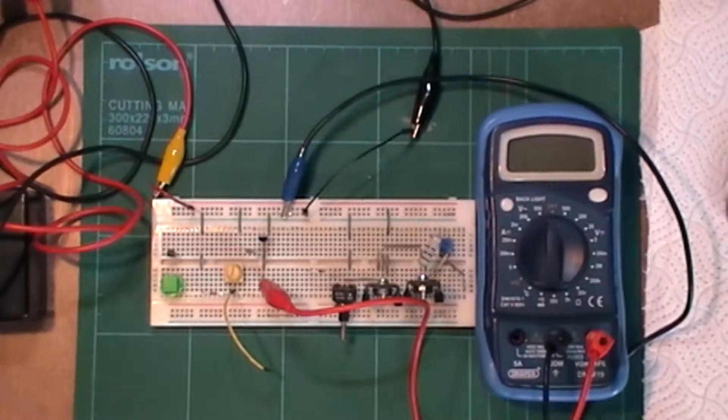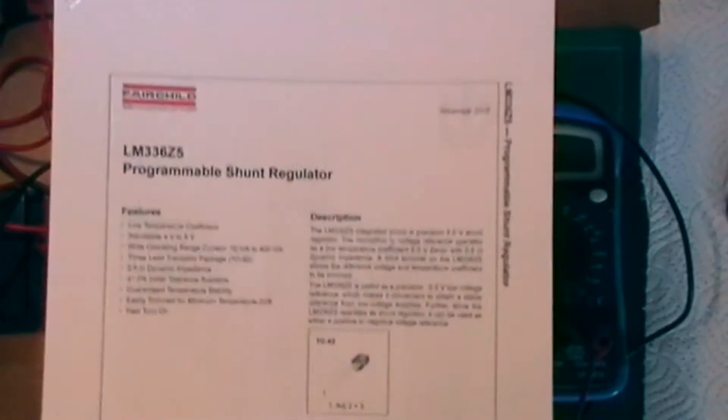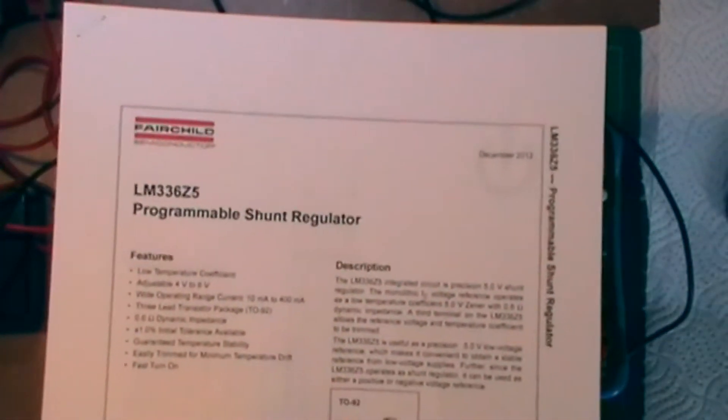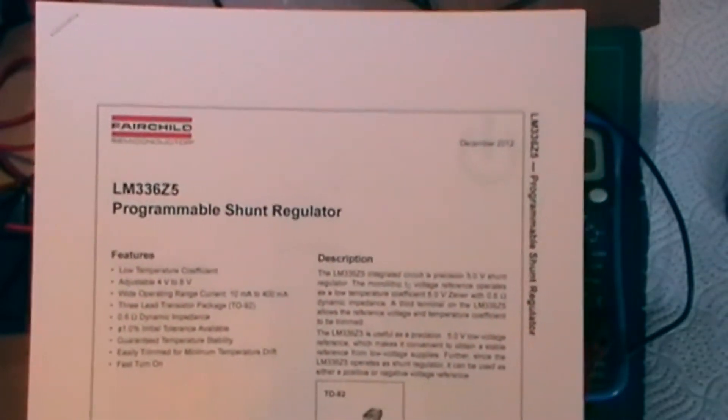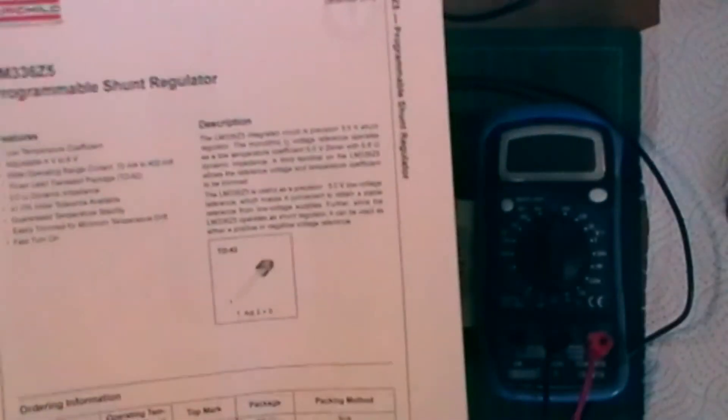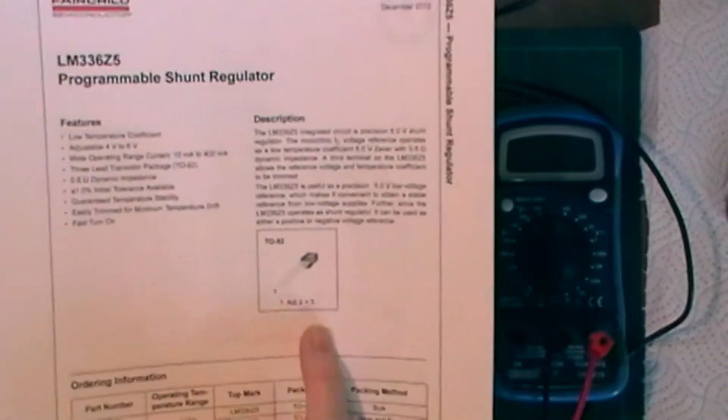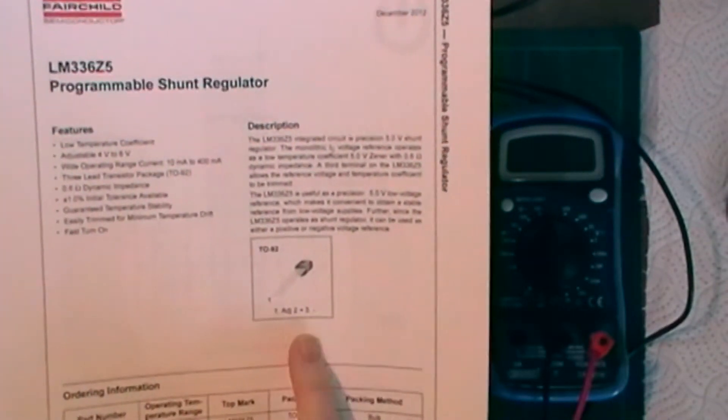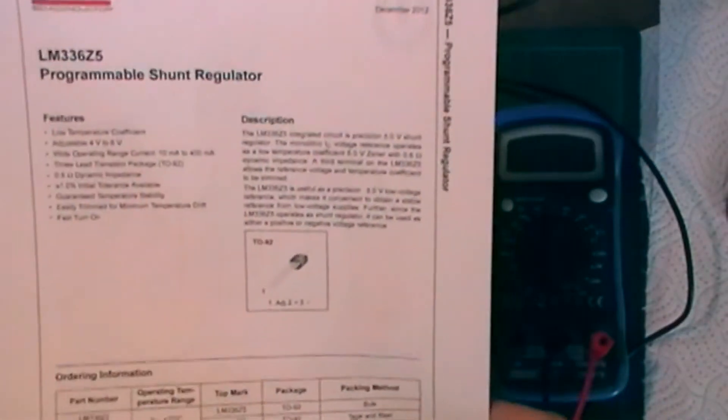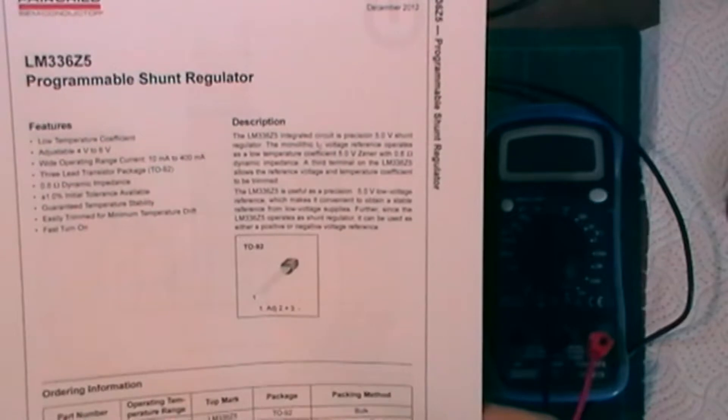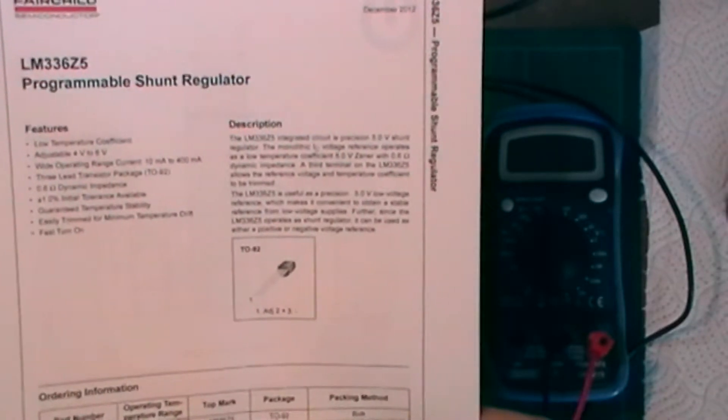First of all there is another data sheet, this is the LM336 from Fairchild for the 5 volt one and this calls it a programmable shunt regulator. Now the pin out from this is the other way which seems to be correct for this particular one. 336 integrated circuit in precision 5 volt shunt regulator. Marvelous.